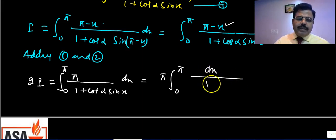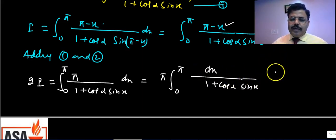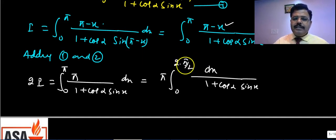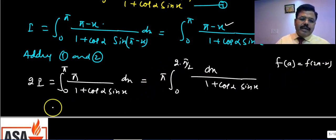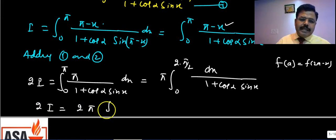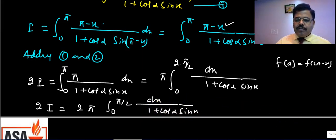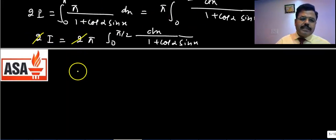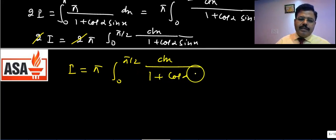We can also write π as 2·(π/2), and since f(π − x) = f(x) holds here, by the property ∫₀^(2a) f(x)dx = 2∫₀^a f(x)dx, we get 2I = 2π·∫₀^(π/2) dx/(1 + cosα·sinx), so I = π·∫₀^(π/2) dx/(1 + cosα·sinx). Now we substitute sinx = 2·tan(x/2)/(1 + tan²(x/2)).